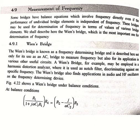Here, not only it is used in AC bridges but it is also used in other applications for various circuits. This Wien's bridge for example can be used for harmonic distortion analyzer where it is used as a notch filter discriminating against one specific frequency.